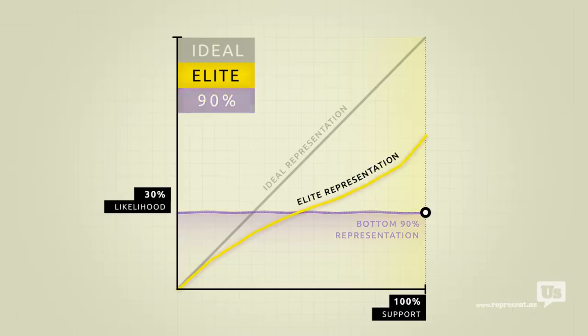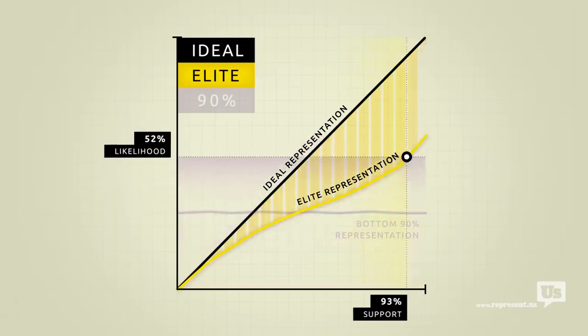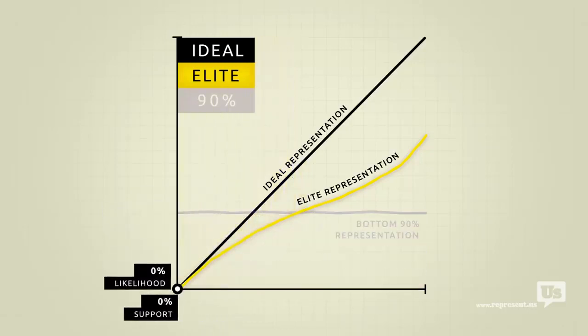Look at how much closer their line is to the ideal. When they want something, the government is much more likely to do it. And when they don't, they have the power to completely block it from happening, no matter how much the rest of the country supports it. They get what they want, and guess who ends up paying for it?